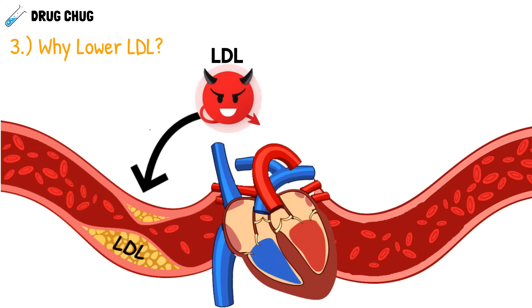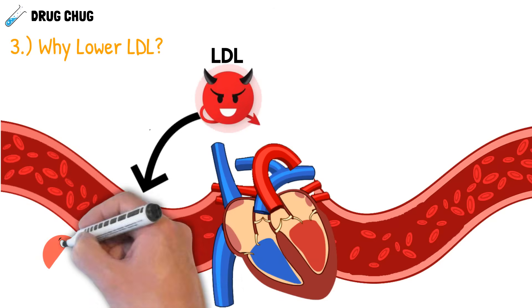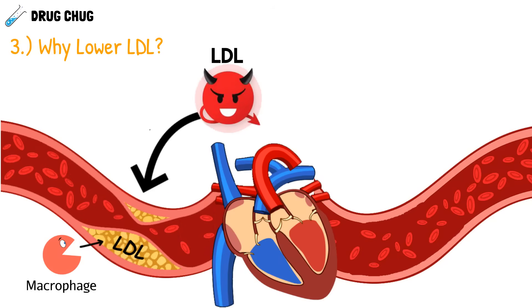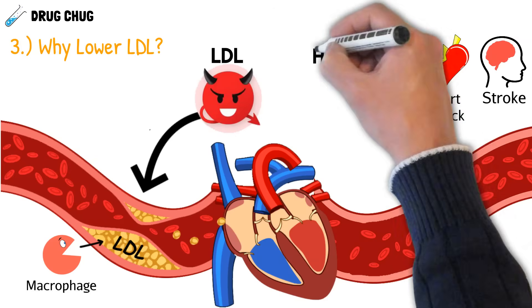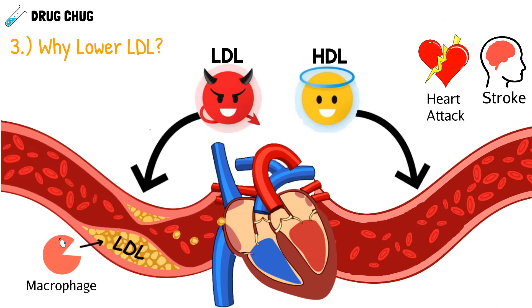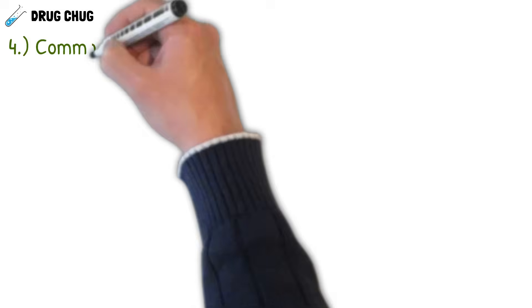Not only does the buildup lower blood flow to the heart and brain, but our body tries to fix the issue by sending macrophages — cells that eat debris — to clean it up. The problem is that macrophages can break off pieces of that buildup, which can reach the heart or brain causing a heart attack or stroke. HDL, our good cholesterol, does the opposite: it sweeps and cleans our blood vessels efficiently to prevent heart attack or stroke.